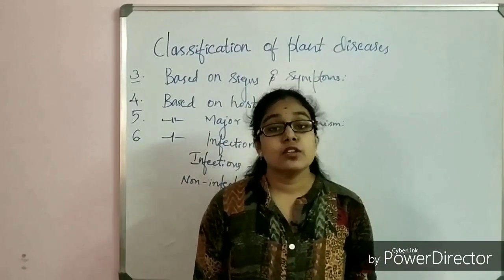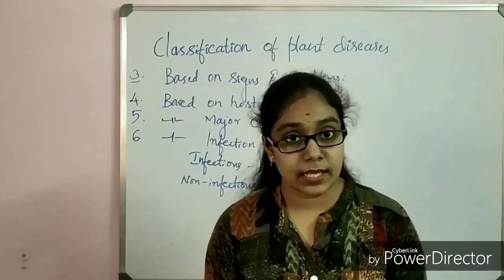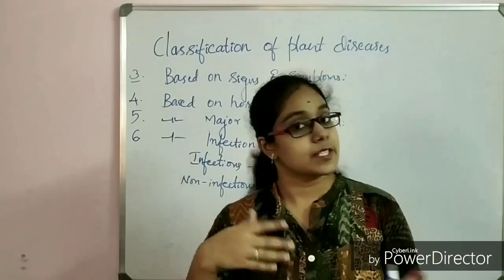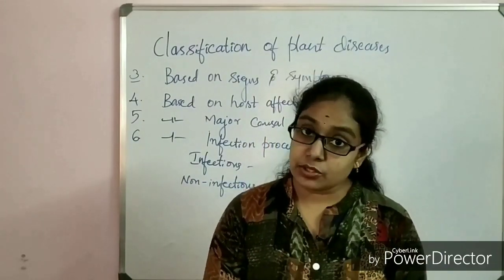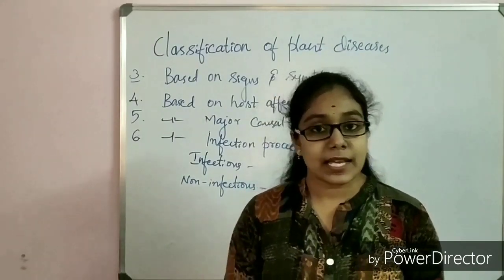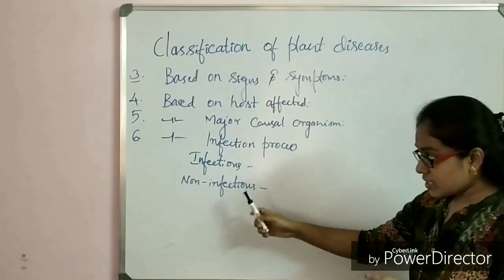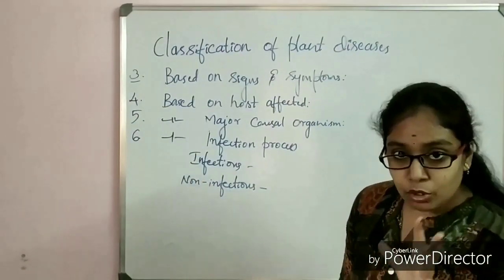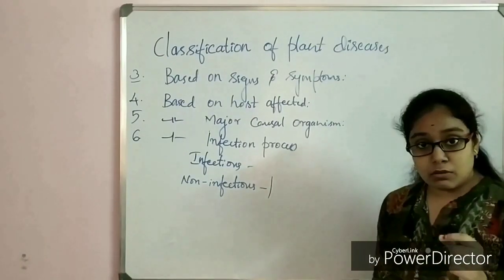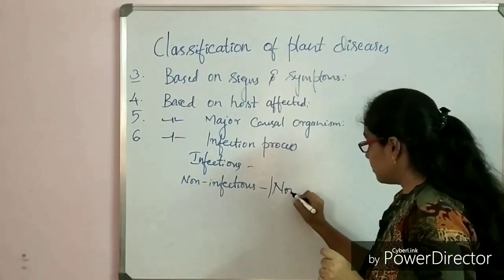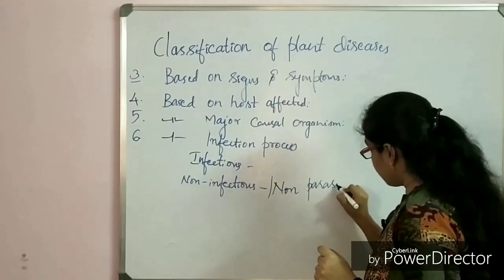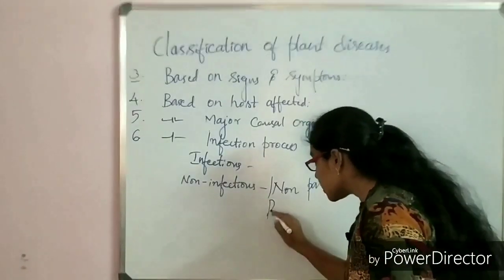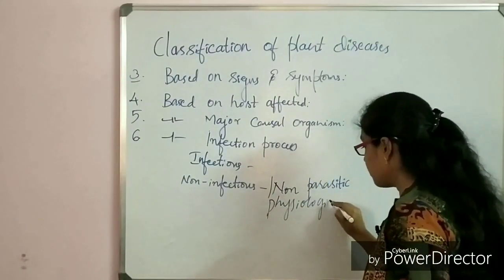Instead, non-infectious diseases are caused by abiotic factors such as nutrient deficiency, excess of nutrition, weather conditions, changes in the soil, changes in water, or even mechanical injuries. Non-infectious diseases are also called non-parasitic diseases, and they are also referred to as physiologic diseases.